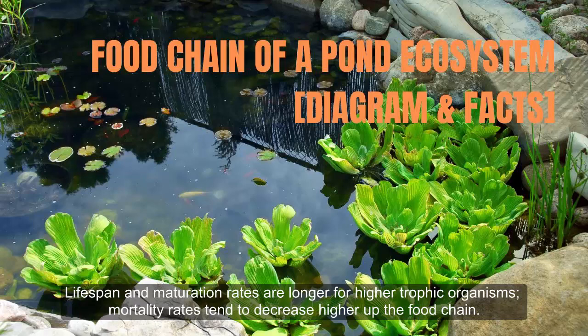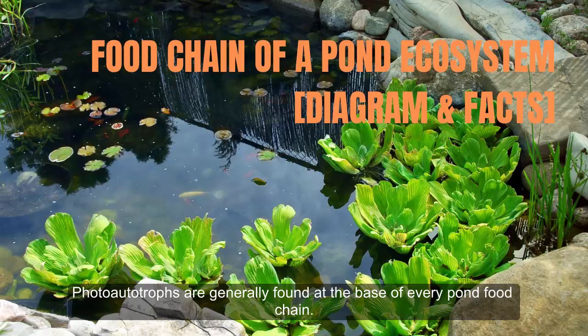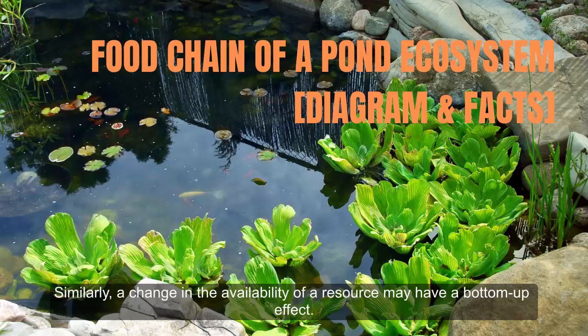Lifespan and maturation rates are longer for higher trophic organisms. Mortality rates tend to decrease higher up the food chain. Some organisms can occupy two trophic levels or may shift their diets in response to changes in the environment. Photoautotrophs are generally found at the base of every pond food chain. A significant alteration of population abundances for organisms in one trophic level tends to have a cascade effect on the rest of the food chain. Similarly, a change in the availability of a resource may have a bottom-up effect.